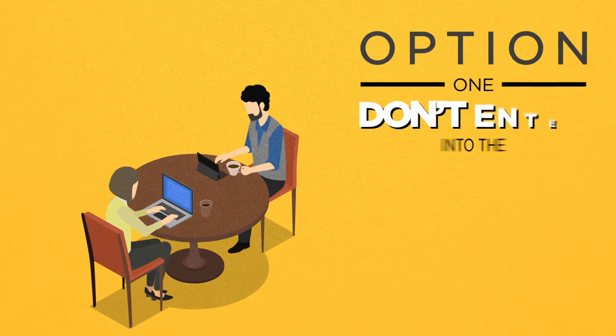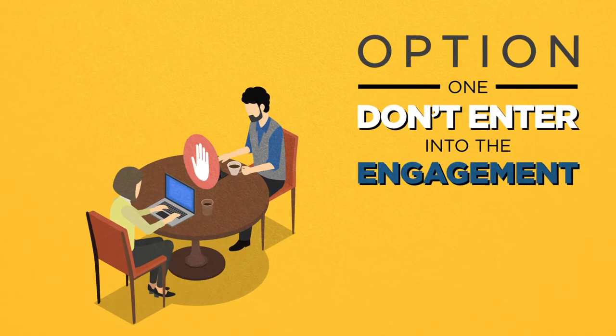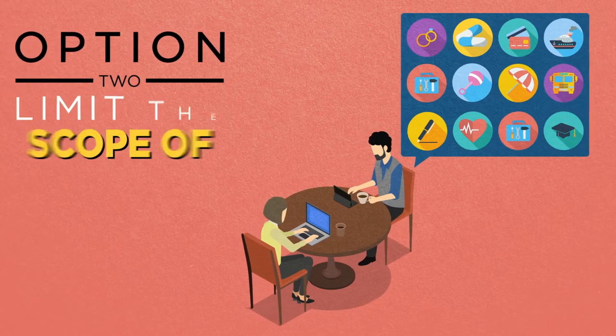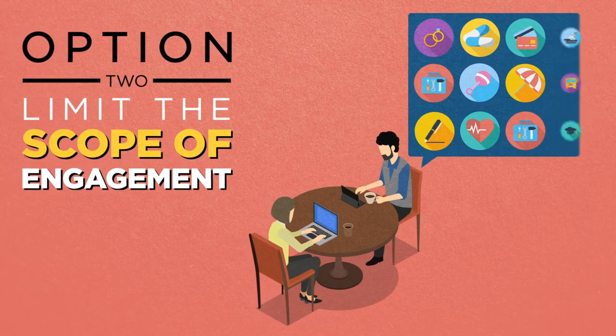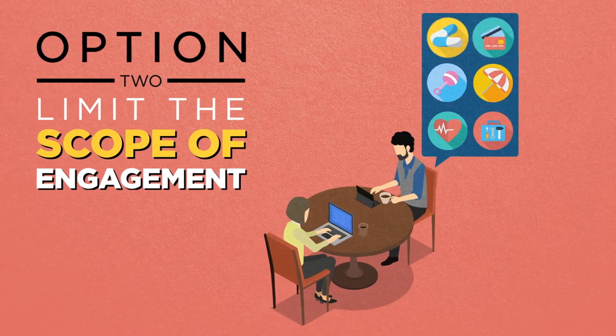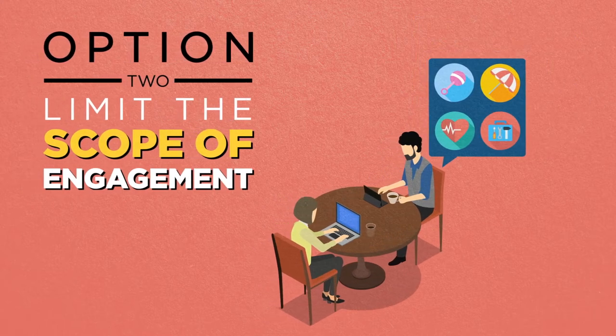The first option is to not enter into the engagement. The second option is to limit the scope of engagement to services that do not require financial planning, and describe to the client the services the client requests that the CFP professional will not be performing.